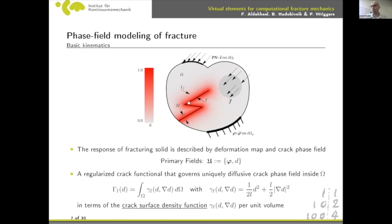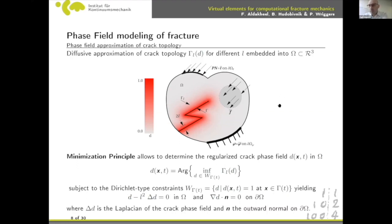The crack phase field d is zero in undamaged regions and one around the crack, representing a sharp crack that we regularize by introducing a crack surface functional in terms of a crack surface density function. This involves a crack length scale parameter l, which controls the transition from the regularized crack to the sharp crack. We solve for the phase field using a minimization of the crack functional, yielding the standard Euler equation well-known in the phase field approach.